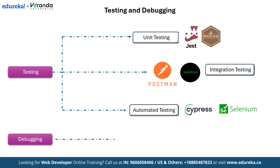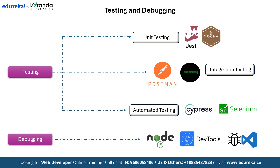Debugging is the process of identifying and fixing errors in your code — think of it as troubleshooting. Useful tools for debugging include the Node.js debugger, Chrome DevTools and the VS Code debugger. By implementing a thorough testing and debugging process, you can ensure your application is reliable, high quality and free from errors.